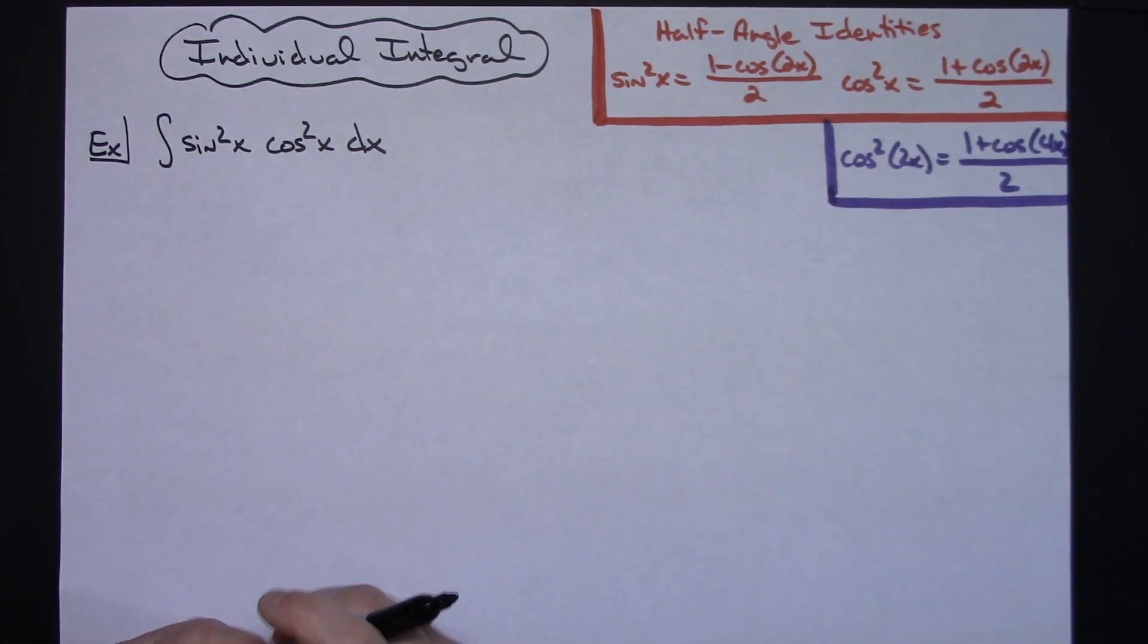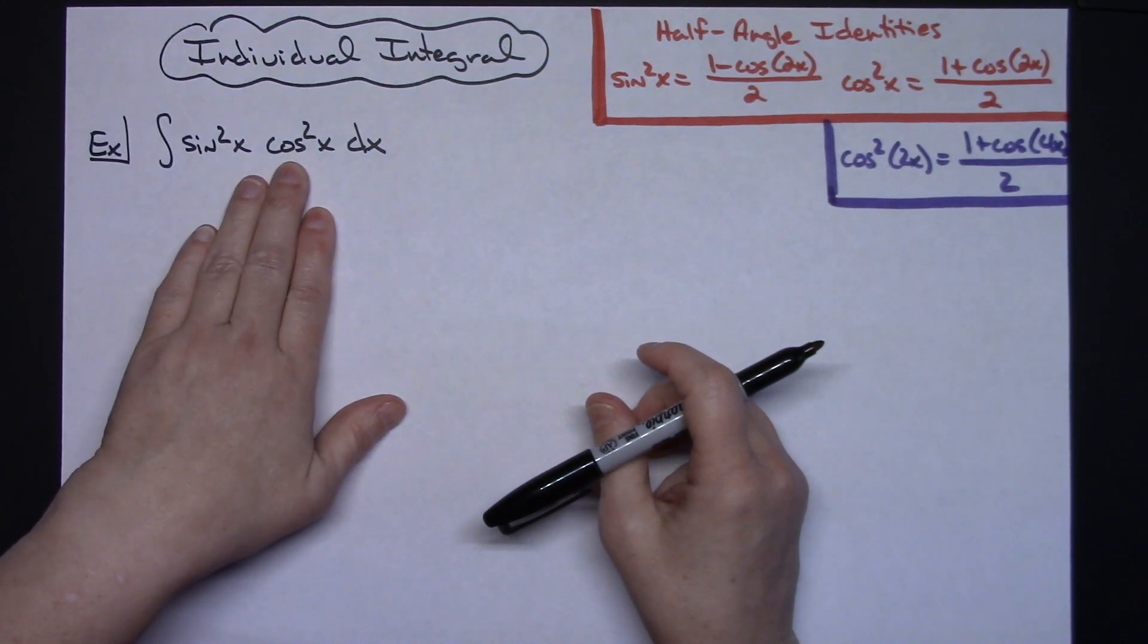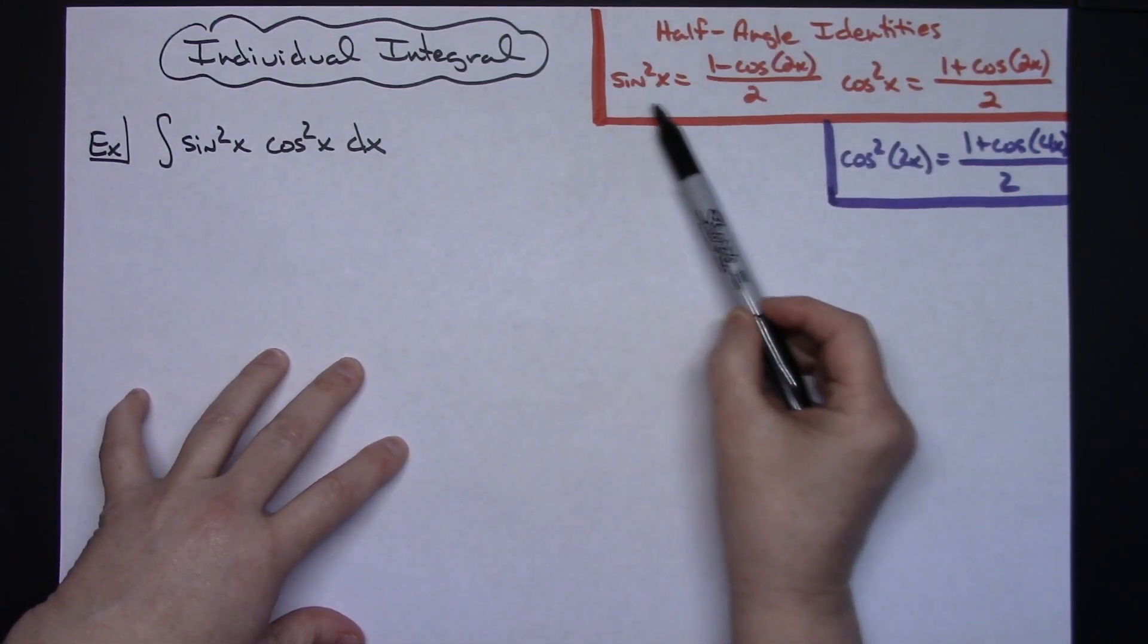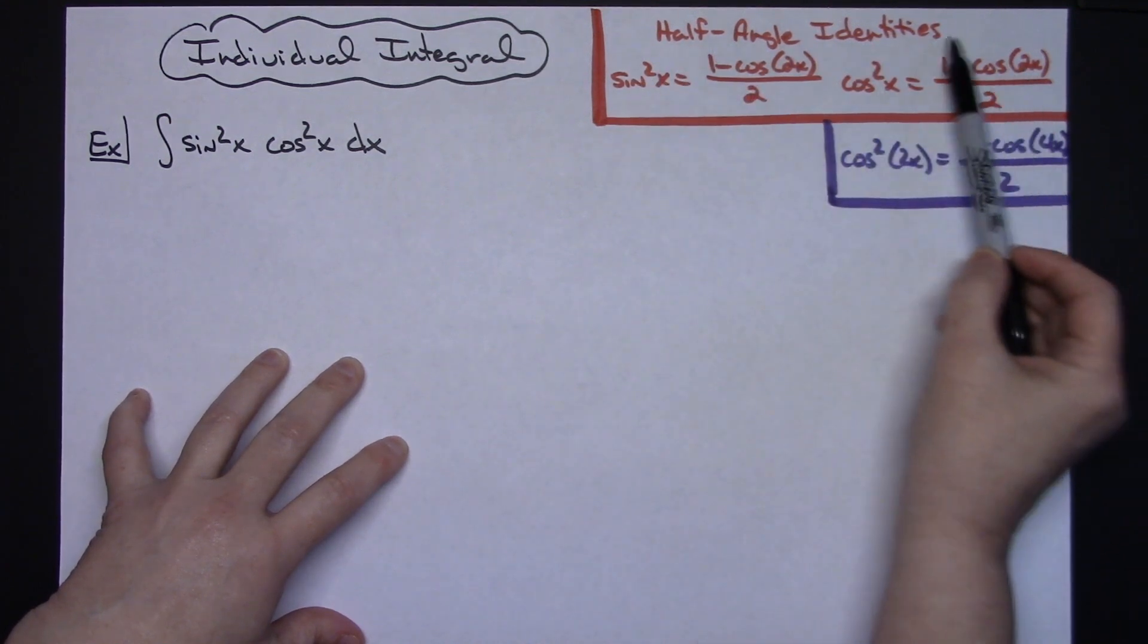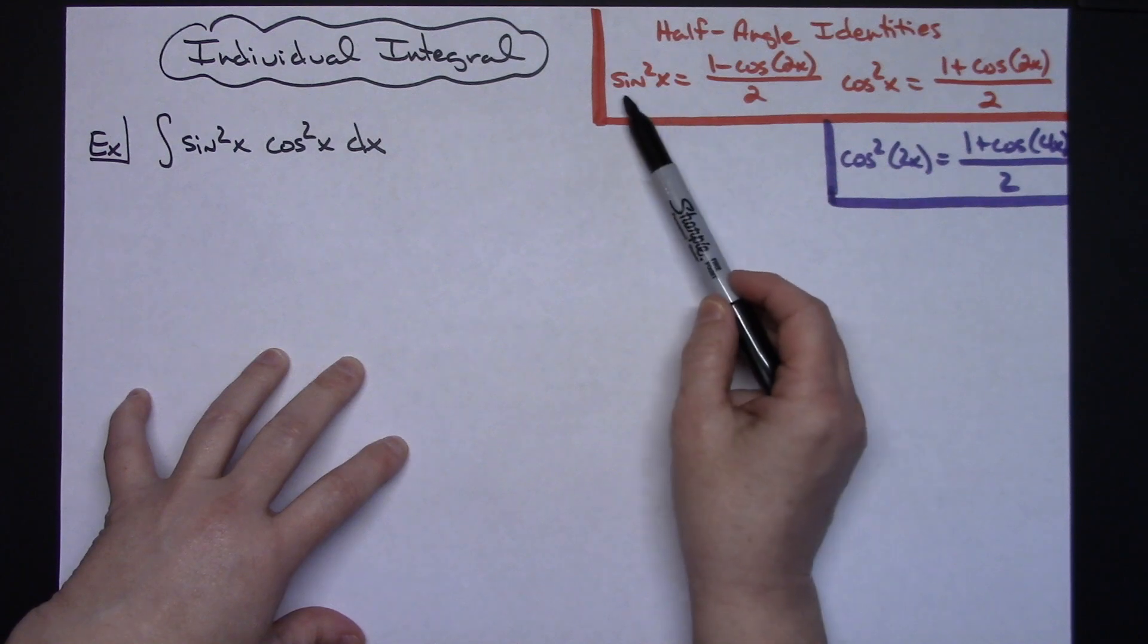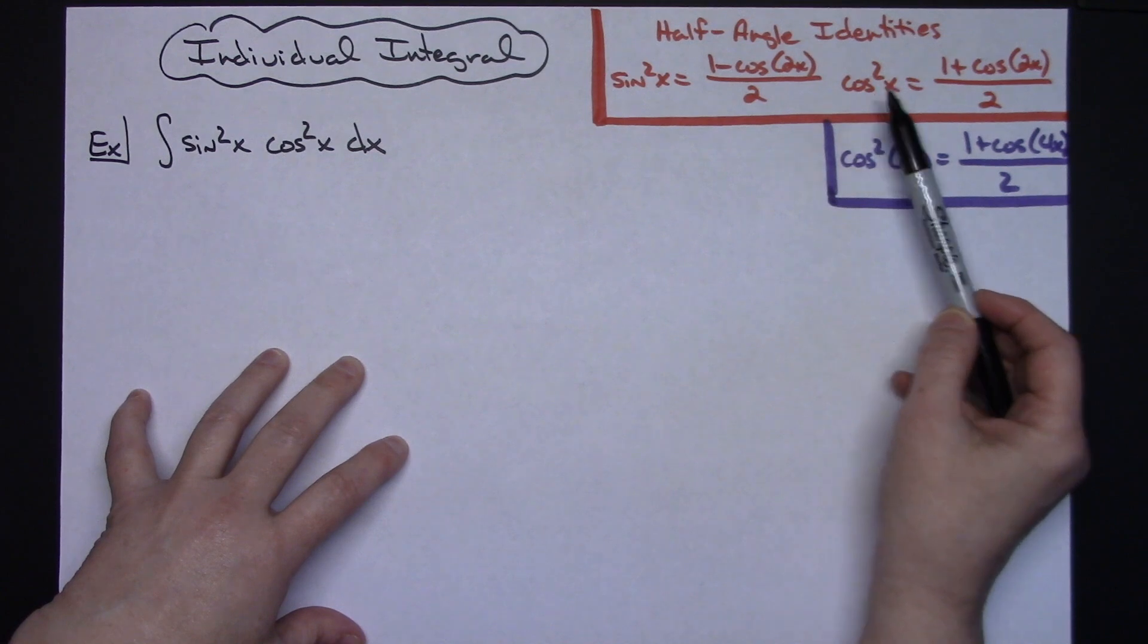In this video I'm going to be working out an individual integral. We're going to take a look at the integral of sine squared x times cosine squared x dx. Before I get started, I've got half angle identities written out over here because I'm going to use those throughout the problem. So we'll use the half angle identity for sine squared x and the one for cosine squared x as well.